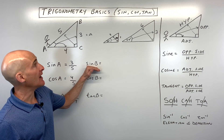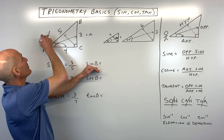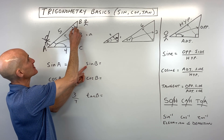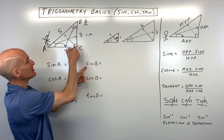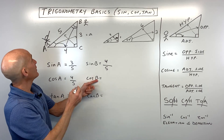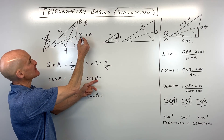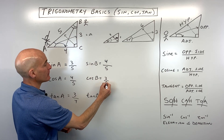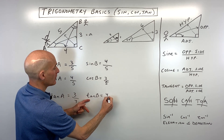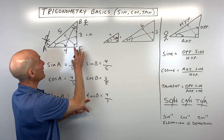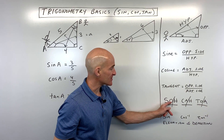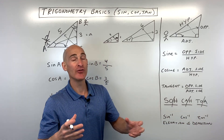Now let's switch over to the sine of angle B. We're no longer at angle A — we're standing at angle B, and that's our perspective. The sine of angle B is opposite over hypotenuse: the opposite side is four, divided by the hypotenuse, five. The cosine of angle B is adjacent over hypotenuse: adjacent is three, over five. The tangent of angle B is opposite over adjacent: four divided by three. Again, we don't use the five for adjacent — that's the hypotenuse. If you remember SOHCAHTOA with the second divided by the third, you'll have those trigonometric ratios.